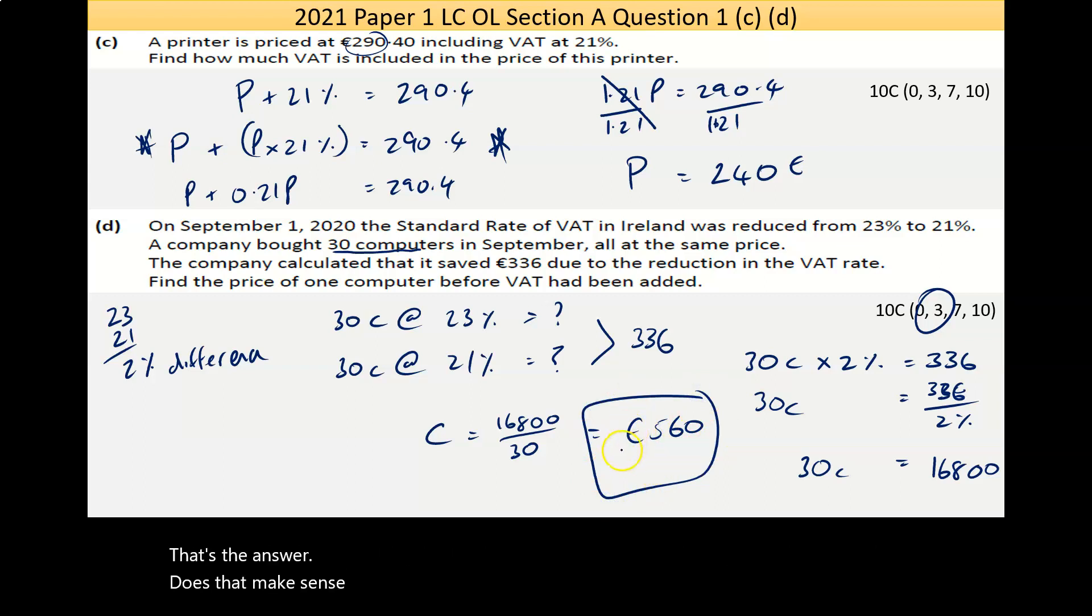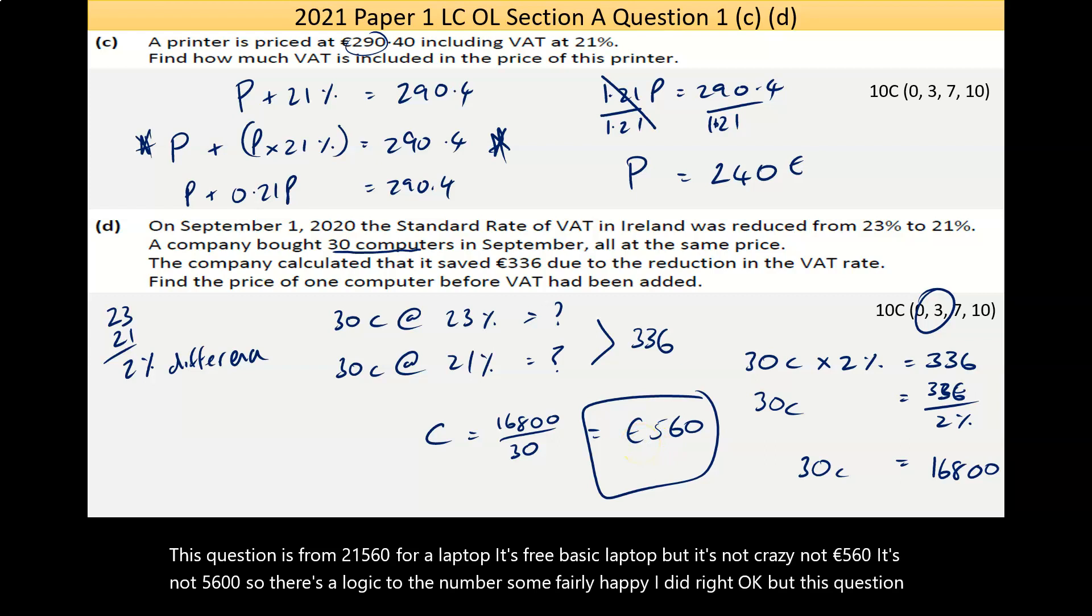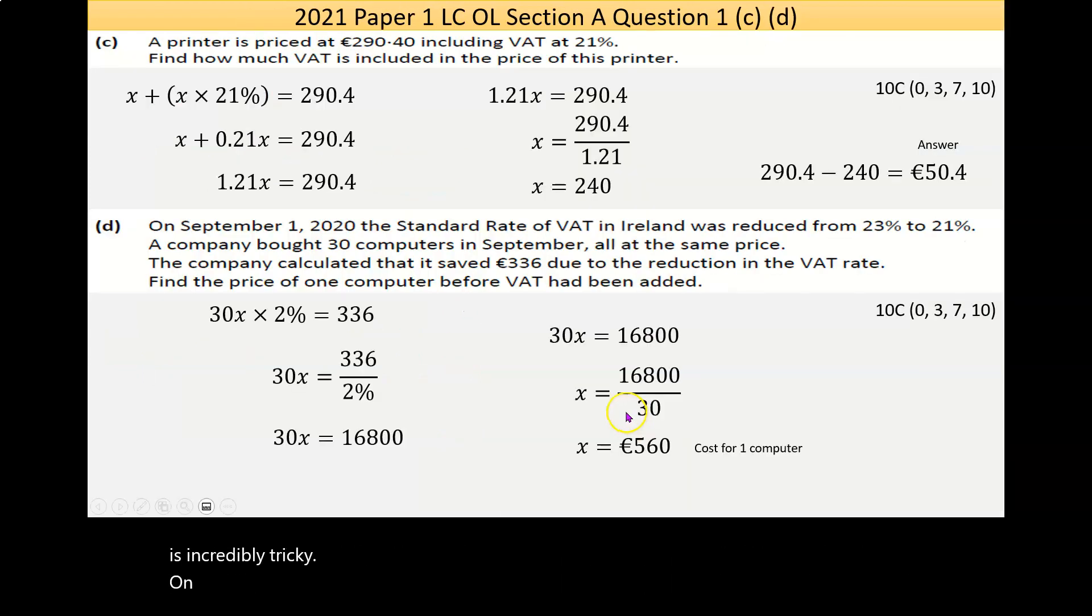Does that make sense? If you always look at your number and see, is that legit price for a computer? This question is from 2021. €560 for a laptop - it's pretty basic laptop, but it's not crazy. Not €5.60, it's not €5,600. So there's a logic to the number, so I'm fairly happy I did right. But this question is incredibly tricky. On the next page just have the answer that's cleaner.